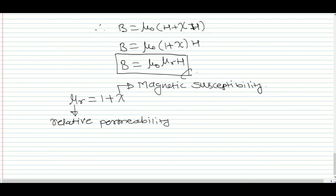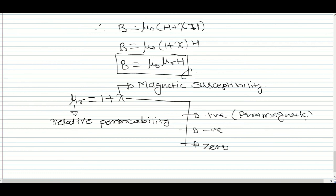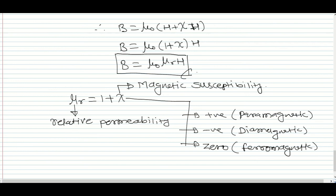Magnetic susceptibility can be positive, negative, or zero. Positive susceptibility corresponds to paramagnetic materials, negative to diamagnetic materials, and the remaining case is ferromagnetic. A memory trick: P for paramagnetic is positive, D for diamagnetic is different (negative), and ferromagnetic is the rest.